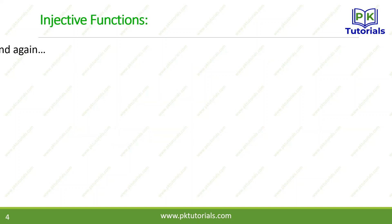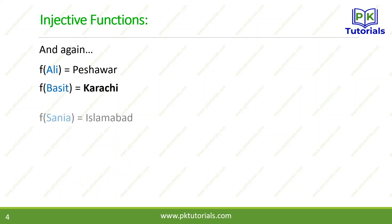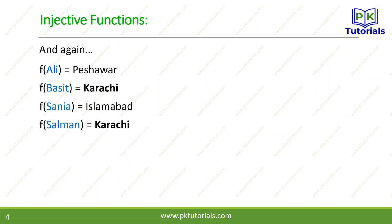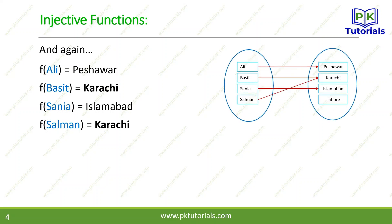Let's understand with an example. پچھلی مثال کو continue کرتے ہیں: Ali کا address Peshawar، Basid کا Karachi، Sania کا Islamabad، اور Salman کا Karachi ہے۔ Set A کے elements set B میں map ہو رہے ہیں لیکن Lahore کسی کو نہیں مل رہا۔ سوال یہ ہے کہ کیا یہ one-to-one function ہے؟